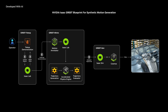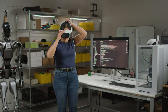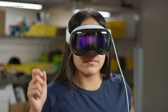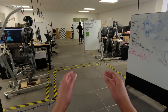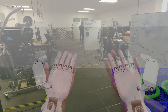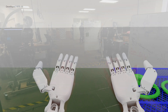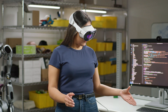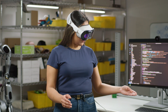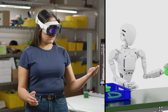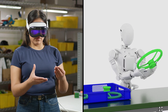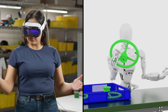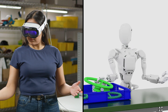Groot Teleop enables skilled human workers to portal into a digital twin of their robot using the Apple Vision Pro. This means operators can capture data even without a physical robot, and they can operate the robot in a risk-free environment, eliminating the chance of physical damage or wear and tear.